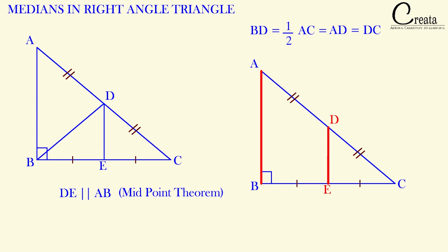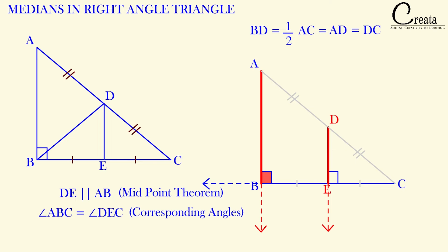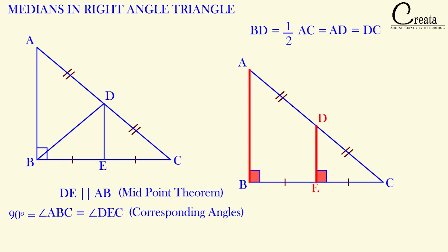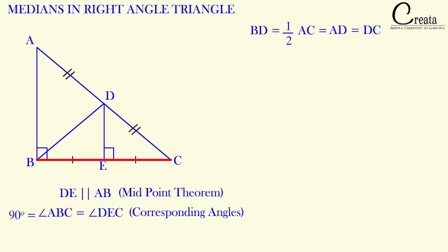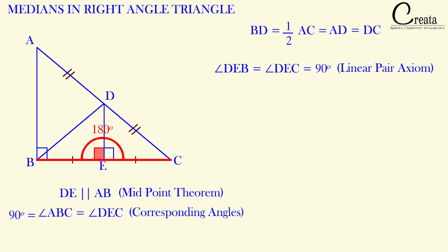Since AB and DE are parallel to each other, and we know angle ABC is 90 degrees (ABC is a right angle triangle), angle ABC and angle DEC will be equal. They are corresponding angles — AB is parallel to DE and BC acts as a transversal. Corresponding angles with parallel lines and a transversal are equal, so angle DEC is also 90 degrees. Since BC is a straight line, by the linear pair axiom, angle DEB is also equal to 90 degrees, giving 90 plus 90 equals 180 degrees.